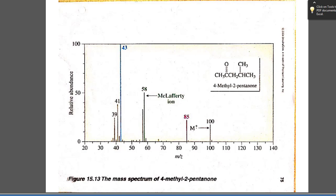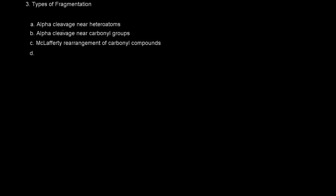A McLafferty rearrangement is also known as Norrish type 2 cleavage, while alpha cleavage is sometimes referred to as Norrish type 1. These are the most common ways that carbonyl compounds fragment in mass spectrometry.